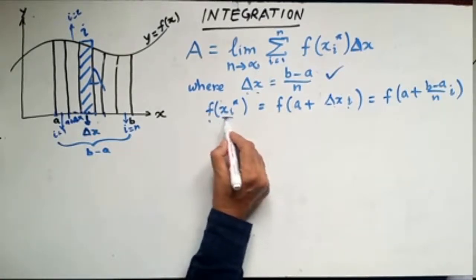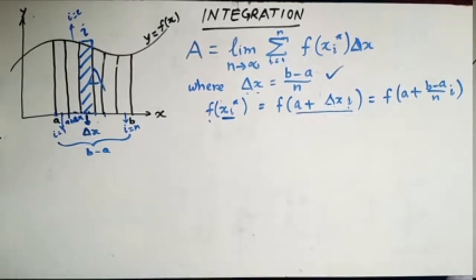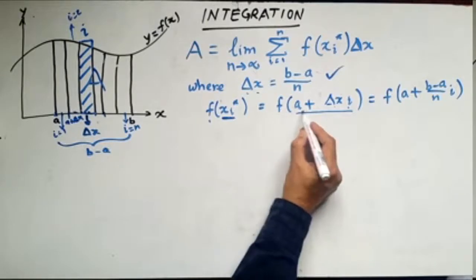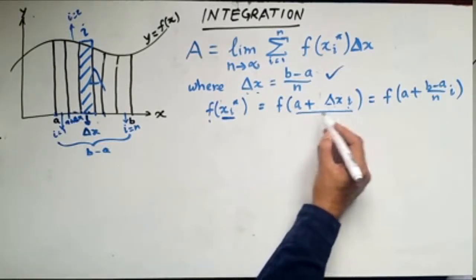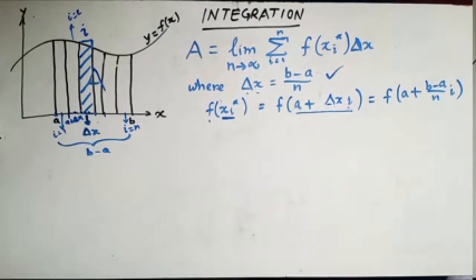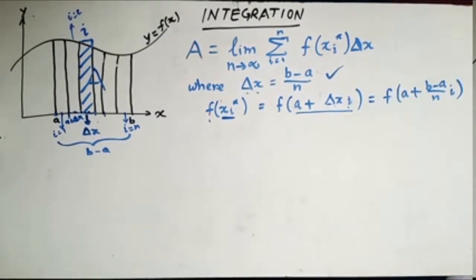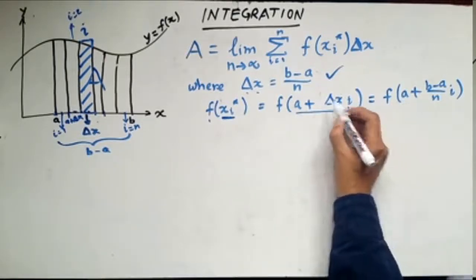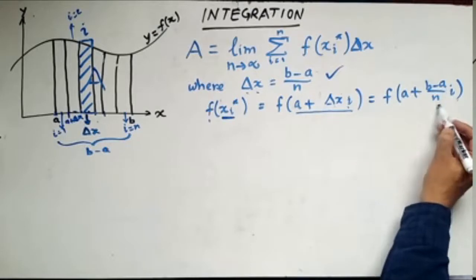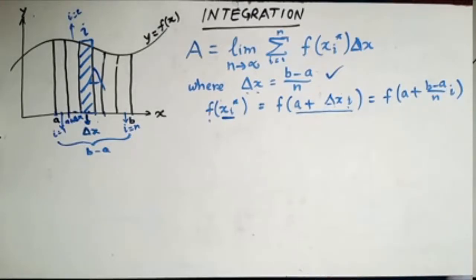We have to find out the value of x at the ith interval, which is a plus delta x times i. So we find the value of the function at a plus delta x into i. Since delta x is b minus a by n, x_i* equals a plus i times (b minus a) divided by n.